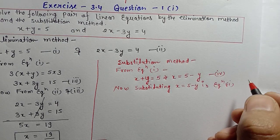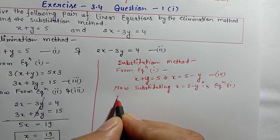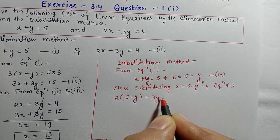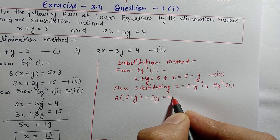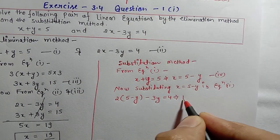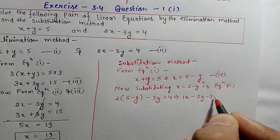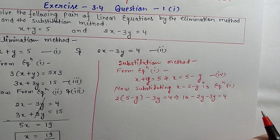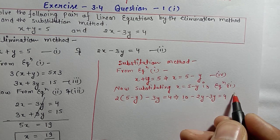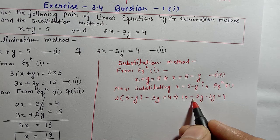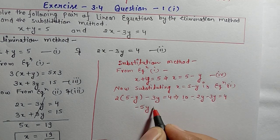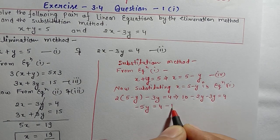Substituting x equals 5 minus y into equation 2, we get 2 times the bracket 5 minus y, minus 3y equals 4. Expanding, this gives 10 minus 2y minus 3y equals 4. Combining like terms, minus 5y equals 4 minus 10.